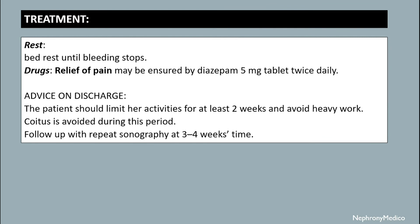Treatment includes bed rest, which should be continued until bleeding stops. Drugs include pain relief. Dydrogesterone 5 milligram tablet twice daily may be used. On discharge, patients should limit activities for at least two weeks, avoid heavy work, and coitus is avoided during this period. Follow-up with repeat sonography at 3 to 4 weeks.